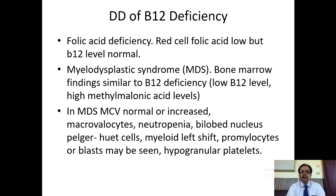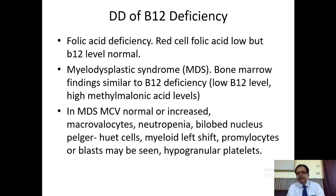The differential diagnosis of megaloblastic anemia: folic acid deficiency — in which red cell folate will be low but B12 level will be normal. Myelodysplastic syndrome — the bone marrow finding is similar to B12 deficiency with low vitamin B12 level; high methylmalonic acid is a recognized feature. In myelodysplastic syndrome, MCV is normal or increased. There will be macroovalocytes, possibly neutropenia, and neutrophils may have a bilobed nucleus known as Pelger-Huët cells.